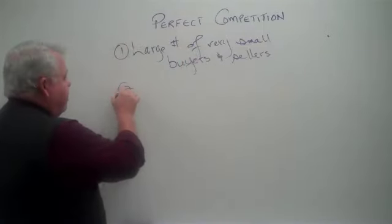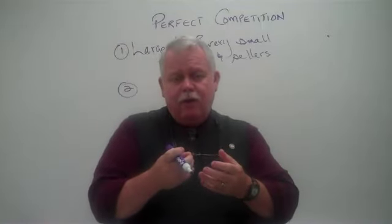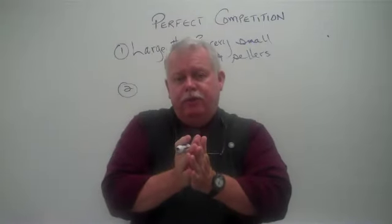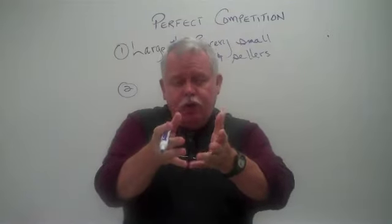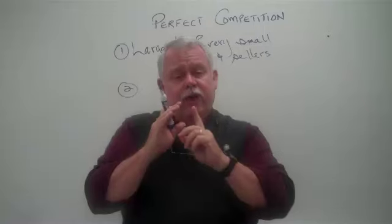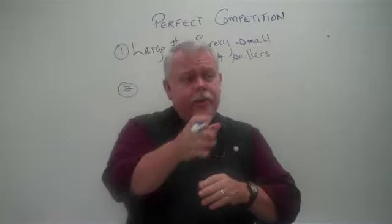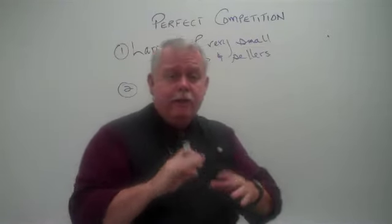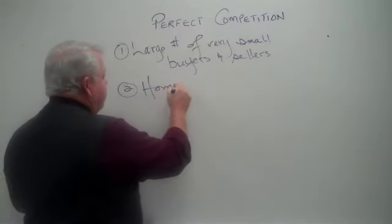Our second assumption is that the sellers of this product are all selling a homogeneous good — meaning the good is identical for every seller. It is identical in the mind of the buyer. A gallon of milk is a gallon of milk — it doesn't matter about the brand name or who is selling it. Every product is identical. So we say homogeneous products.